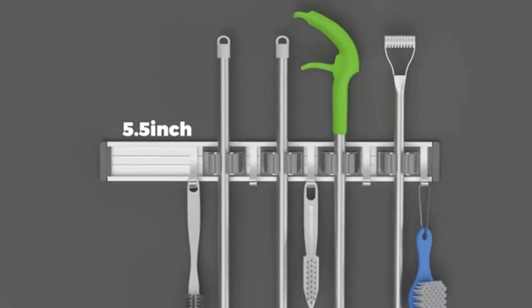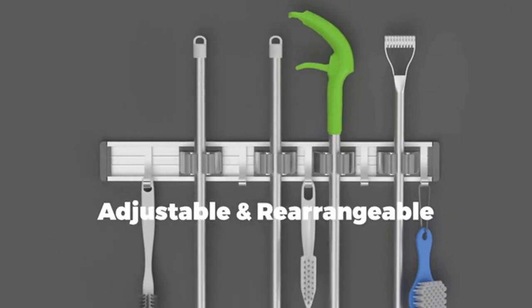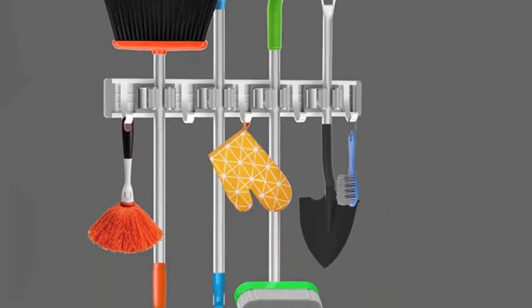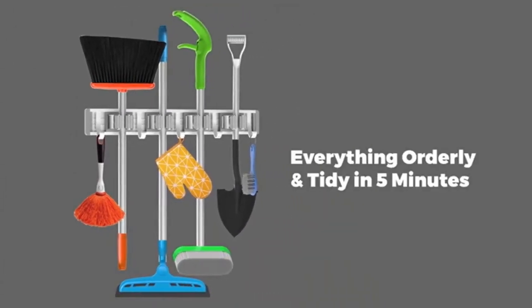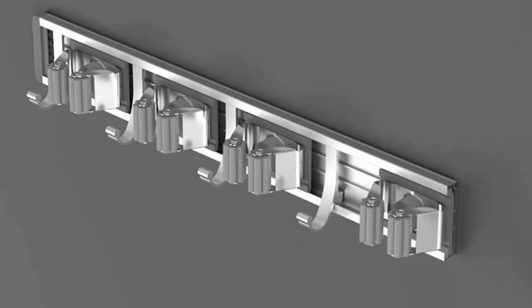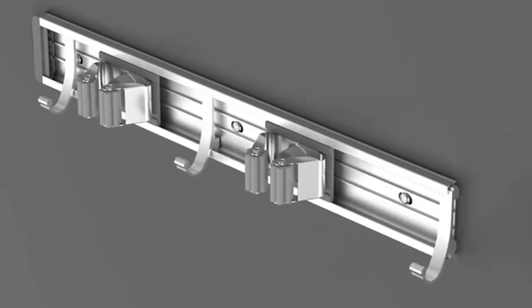Adjustable racks and hooks can be rearranged and removed depending on tool size at any time. One-handed push design - easy to install and easy to take and put back cleaning items. Non-slip grip locks and secures tools like brooms and dusters.